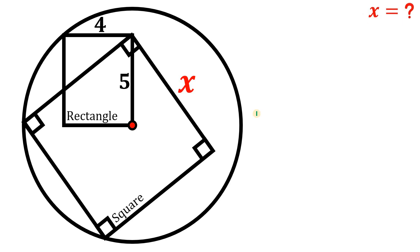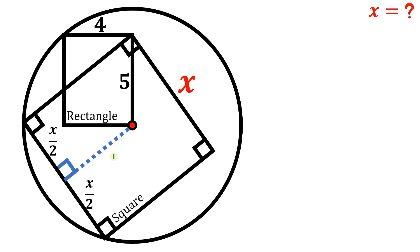Alright, so to answer this kind of question, what we're going to do is focus on the center of the circle and draw a perpendicular line directly to the side of our square. Now since this segment is perpendicular to the side of the square, it cuts the side of the square into two equal pieces. So since the side of the square equals x, this piece equals x over 2 and the other is x over 2.